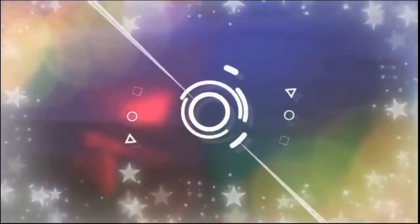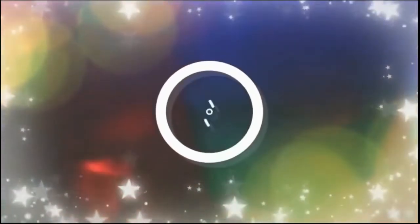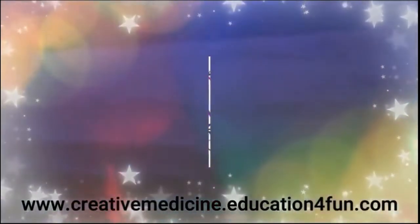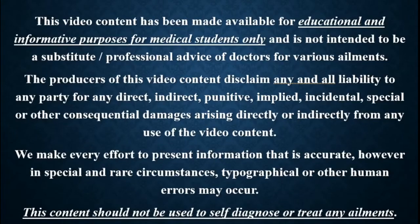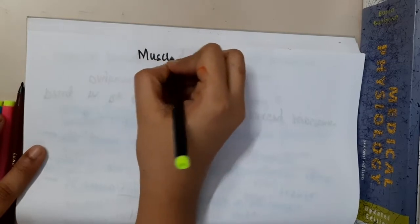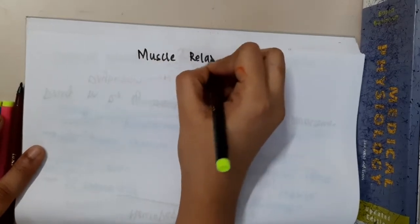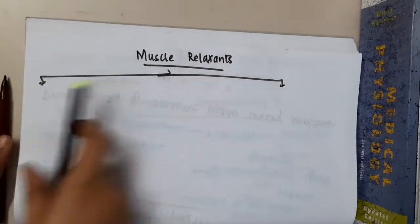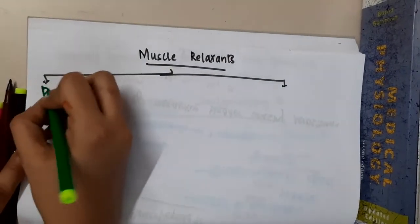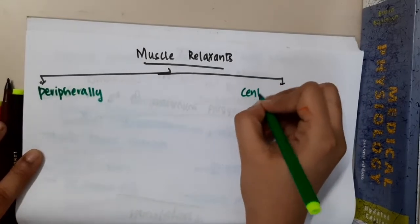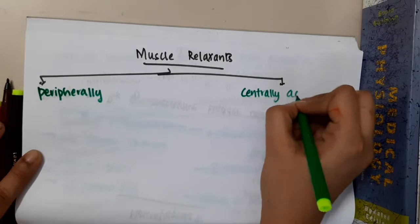Hello friends, welcome to Creative Medicine. In this lecture we will learn about the classification of muscle relaxants. They are divided into two types: first, peripherally acting muscle relaxants, and second, centrally acting muscle relaxants.